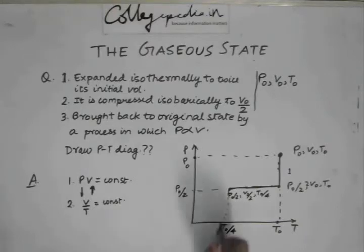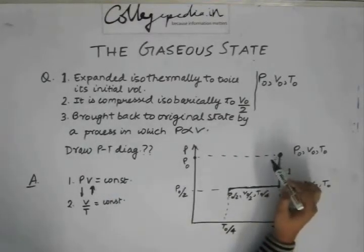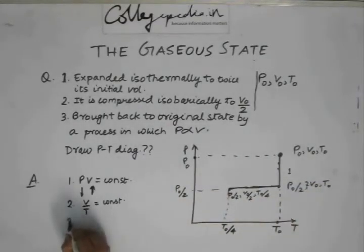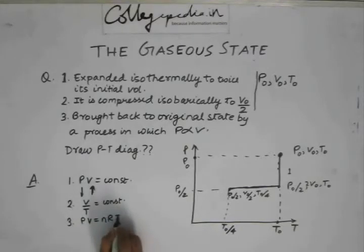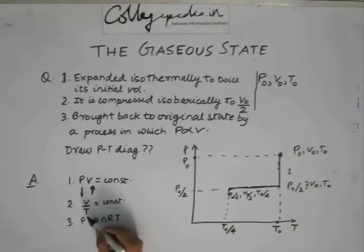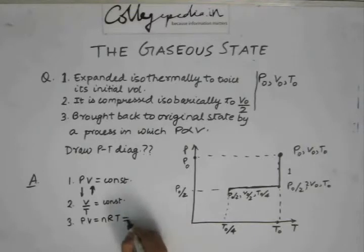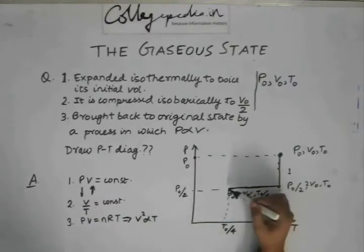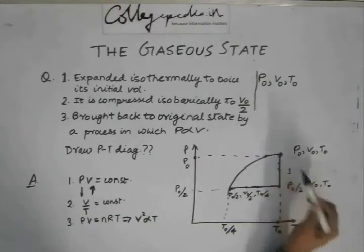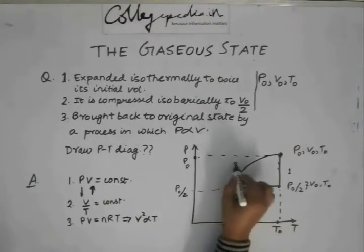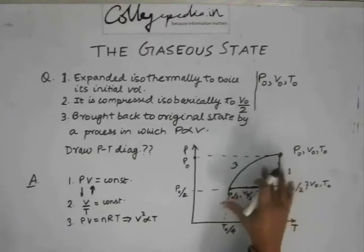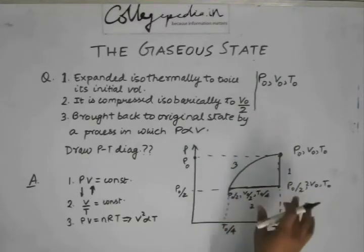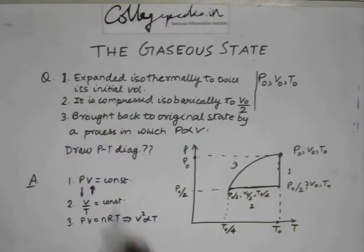Now, the gas is brought back to its original state by a process in which P is proportional to V. Writing the equation of state: if P = kV for some constant k, then kV² = nRT, which means V² is proportional to T. So if we plot a graph between T and V, it is a parabola. Therefore, this third process is a parabolic curve on the P-T diagram, going from the state at T₀/4 back to the original state.